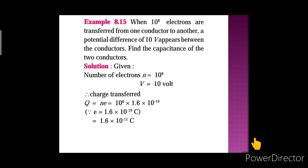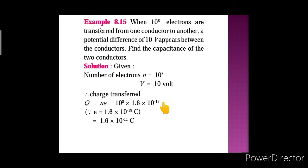The charge transferred Q we can write as n into e. As n is given as 10 raise to 8, and e is 1.6 into 10 raise to minus 19 coulomb, which is the charge of the electron. So Q equals 10 raise to 8 into 1.6 into 10 raise to minus 19, which gives 1.6 into 10 raise to minus 11 coulomb.